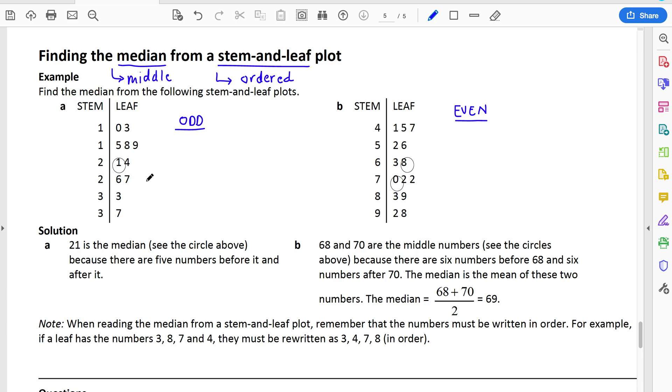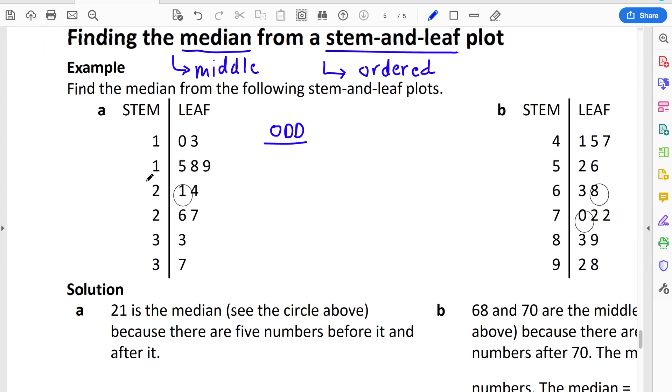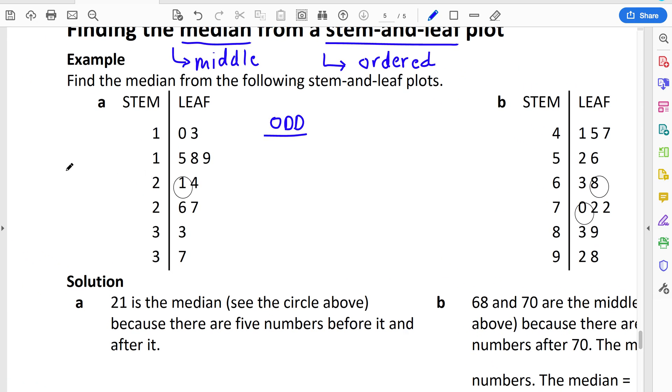So if we have a look at this first one, I'll just zoom in a little bit. Whenever you are doing this, what you might want to do to start off with is actually count how many values you've got so that you can see whether you've got an odd number like this or whether you've got an even number like the next example.